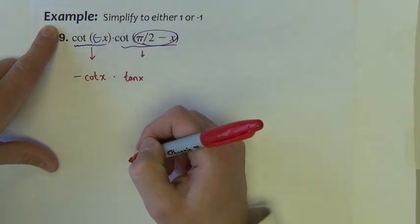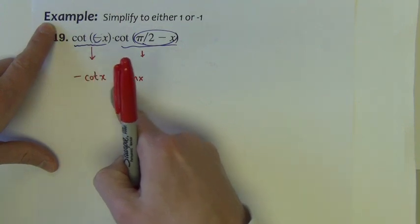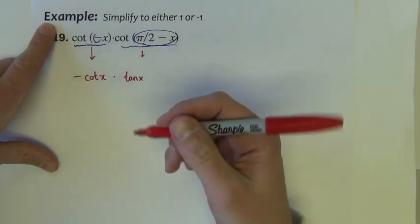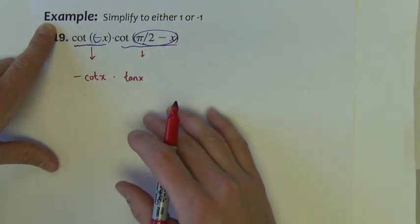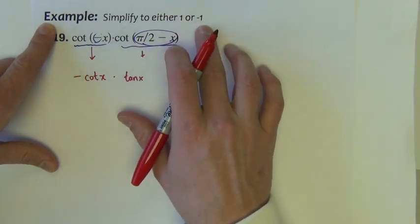And they are multiplied together. So we have negative cotangent x times tangent x. Well, what can we do with that? There's a lot of things we could do with it. There's maybe three or four different ways we could go to get to either 1 or negative 1.